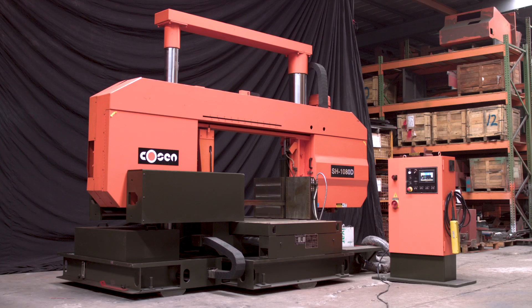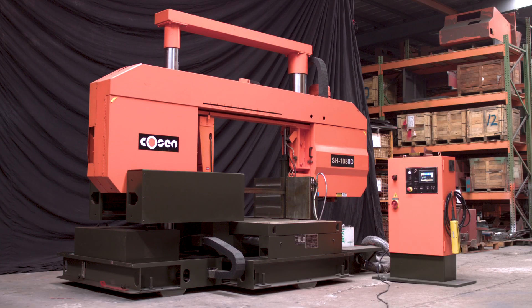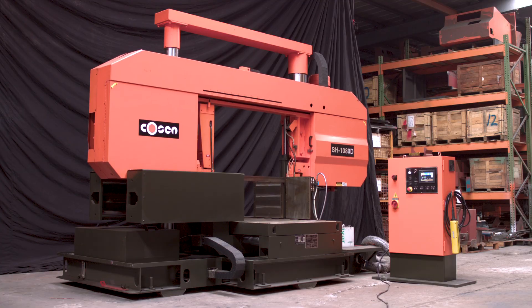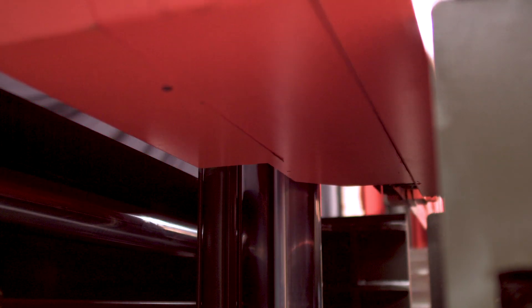The SH-1080D is a semi-automatic dual column bandsaw. With its true dual column design, the saw allows for more rigidity and stability during cuts.